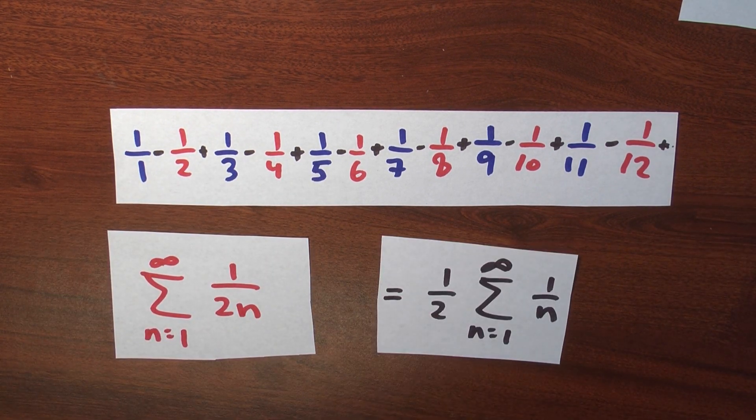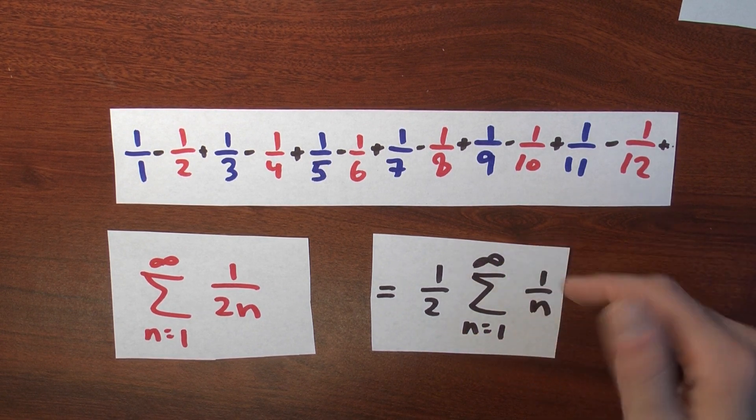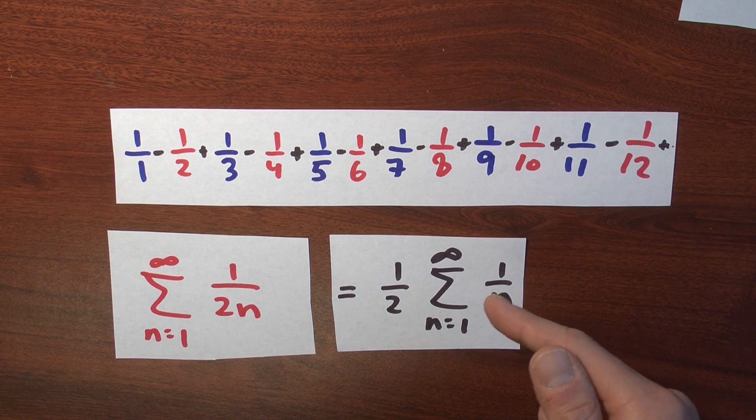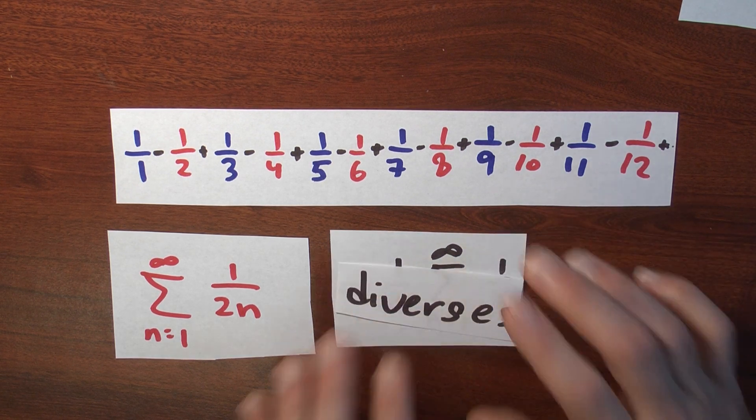Well, that's 1 half of what I get when I add up 1 over n goes from 1 to infinity. But that's half of the harmonic series, right? That means that this diverges.